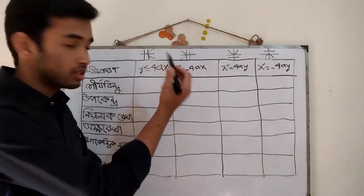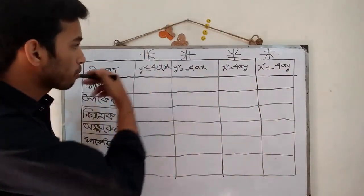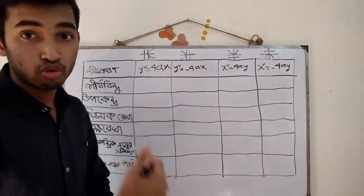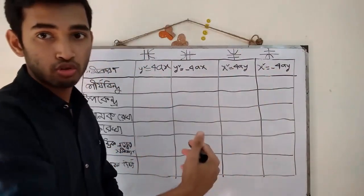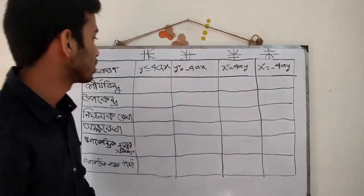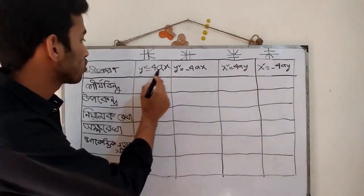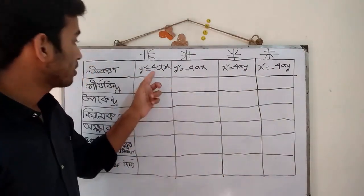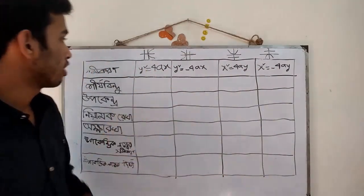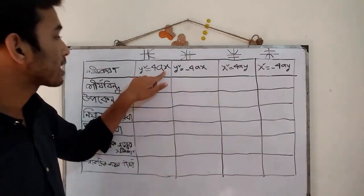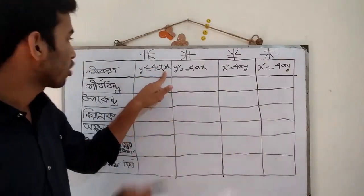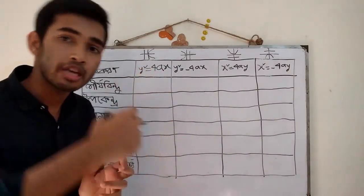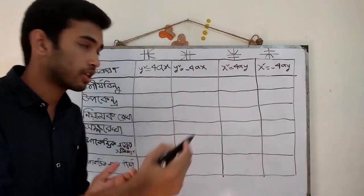Here we add 1 to a 4x. We will find this trick. 1 plus k is 1 plus x.